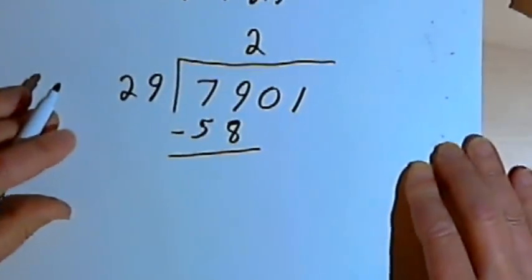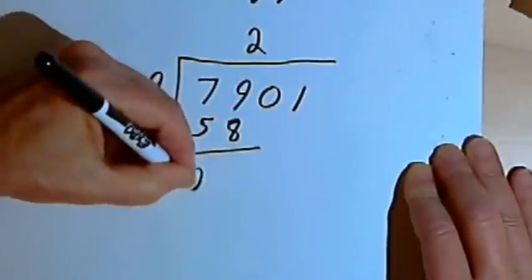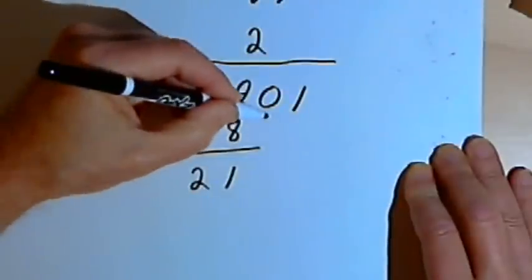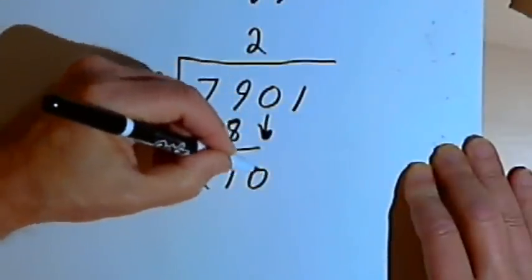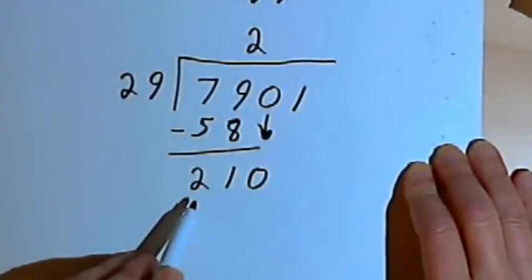My next step is subtraction. 79 minus 58 is 21. And I want to bring down the next digit, which is a 0. So 29 has to be divided into 210.